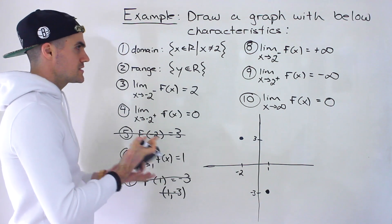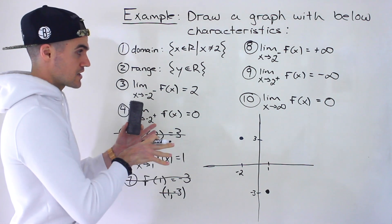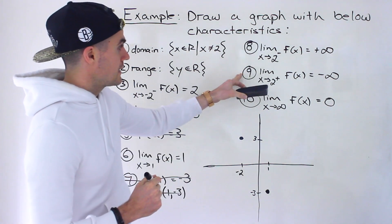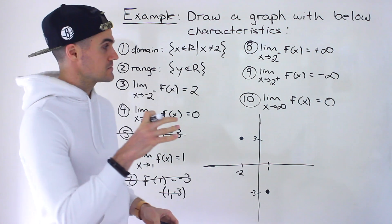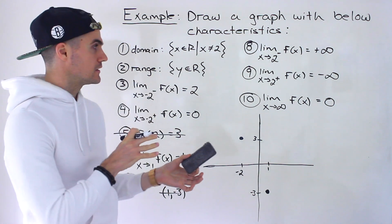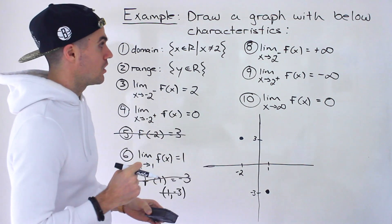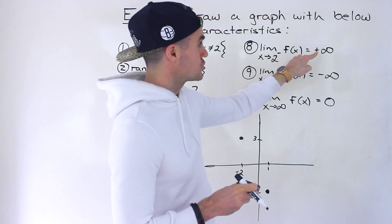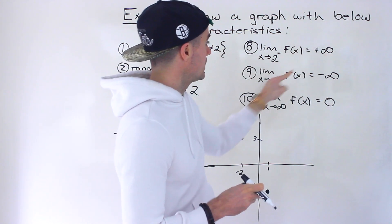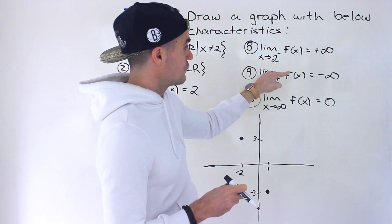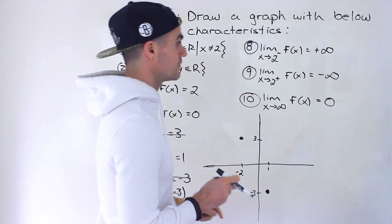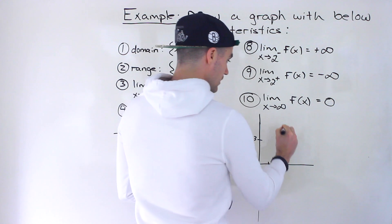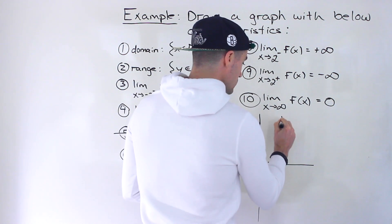From here it's really up to you what you want to do — you can even pause the video and try this yourself. Personally, I'm going to work with limits 8 and 9, because that is a vertical asymptote. There's not much flexibility in terms of how that's going to look. Vertical asymptotes pretty much all look the same. As x approaches 2 from the negative side, the function is approaching positive infinity, and as x approaches 2 from the positive side, the y values are going towards negative infinity. This is a characteristic of a vertical asymptote.